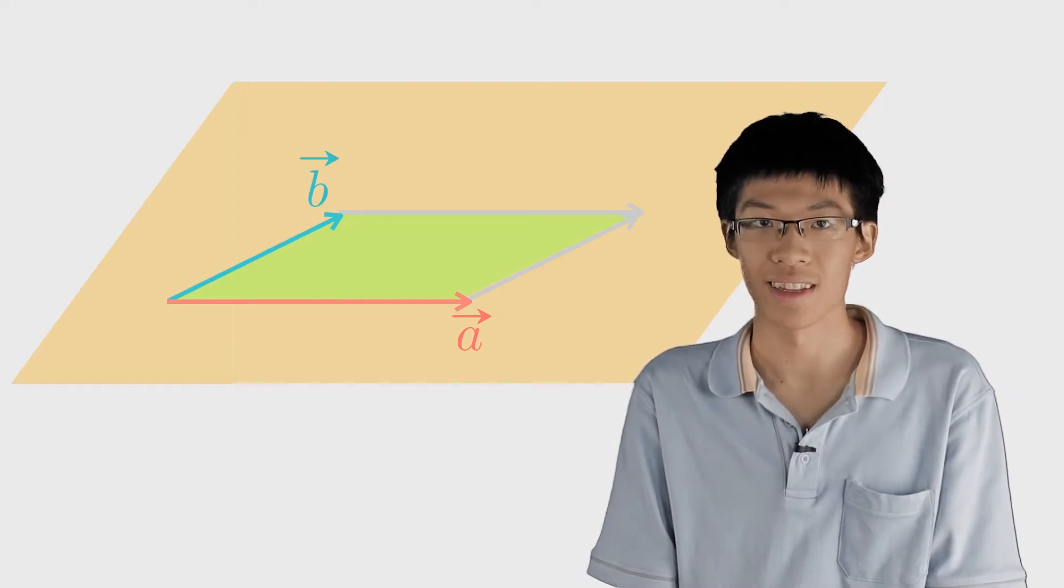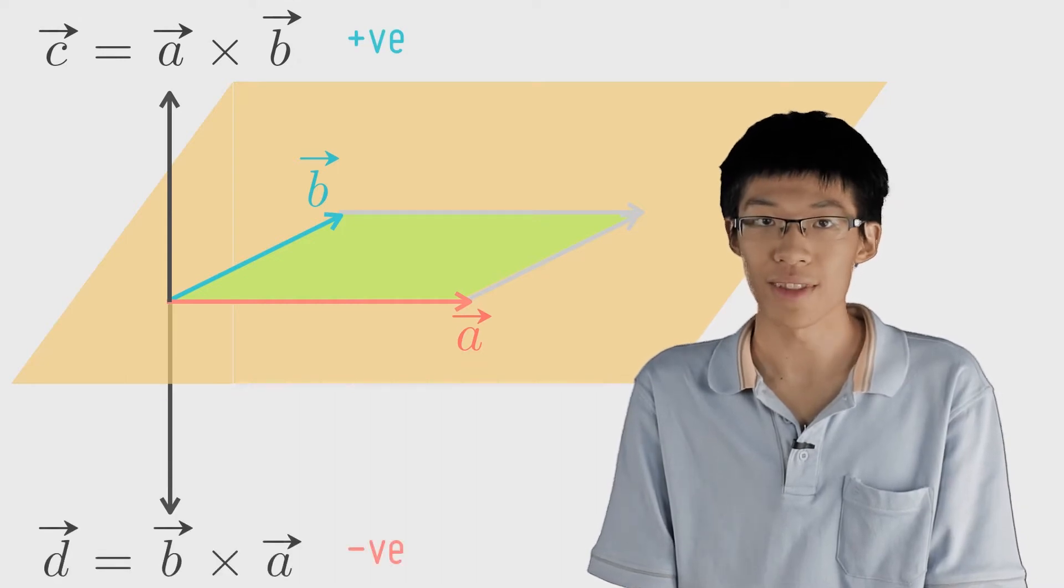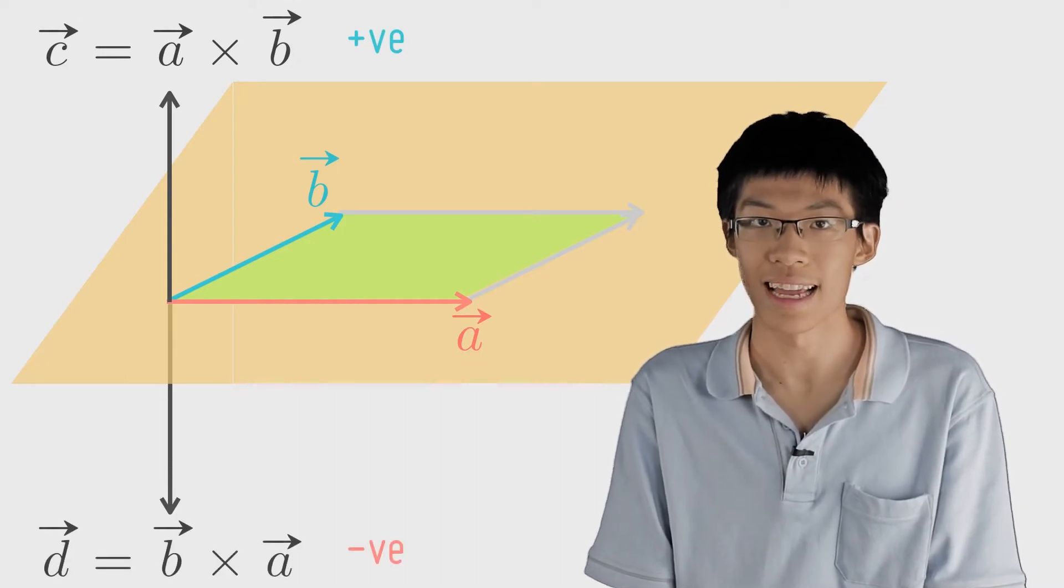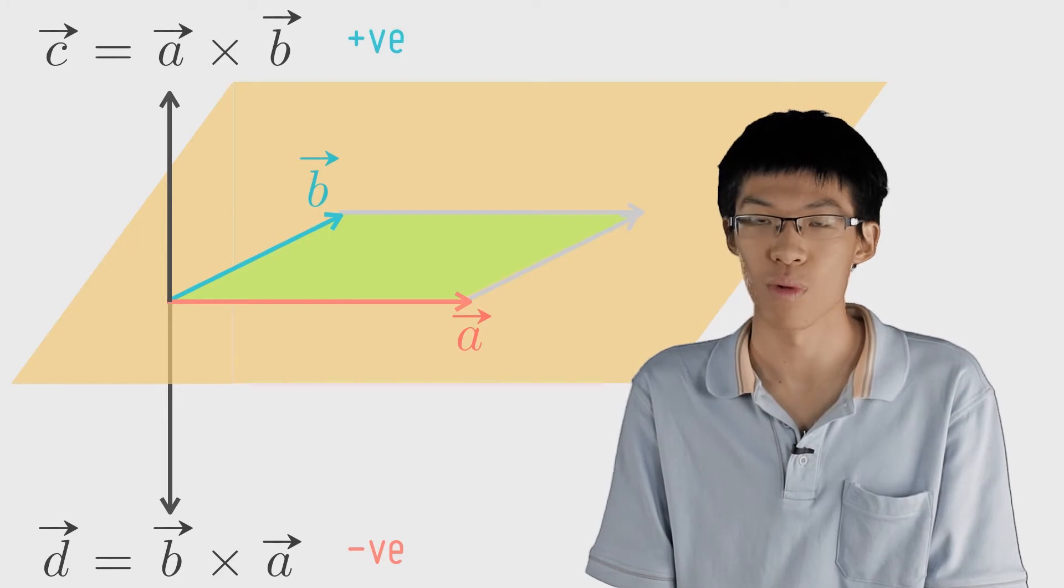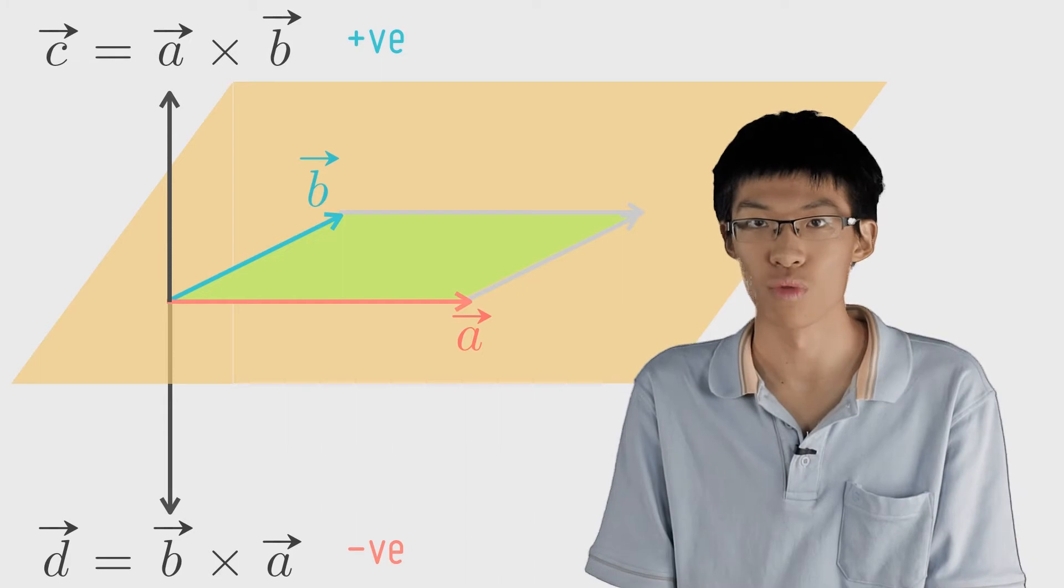One of these vectors points upwards and the other downwards. By definition, the upwards one is a cross b and the downwards one is b cross a. This is just a convention and it's called the right hand rule.